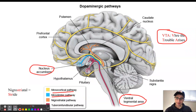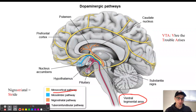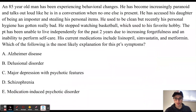The mesocortical pathway is also affected in schizophrenia. Less dopamine is sent from the ventral tegmental area to the cortex, resulting in the negative symptoms of schizophrenia like social withdrawal, flat affect, speech impairments, and cognitive impairment. This patient clearly does not have those features, so we can safely rule out answer choice D.